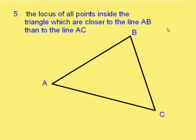Now, a fifth one, the locus of all points inside the triangle, which are closer to the line AB than to the line AC. Now, to get regions which are closer to the line AB than to the line AC, we have to think about where the halfway point is. What's the locus of points which is exactly the same distance from AB and AC? And that's what we call an angle bisector.